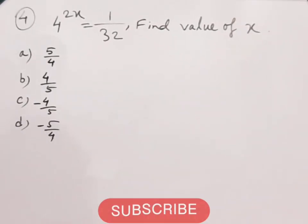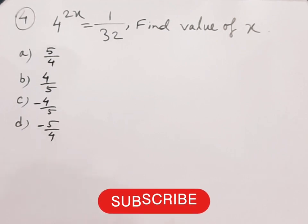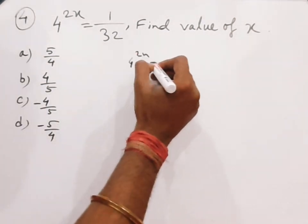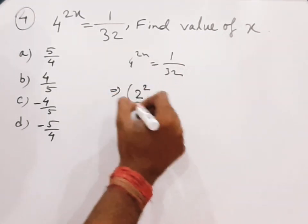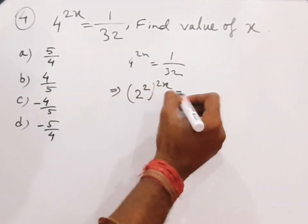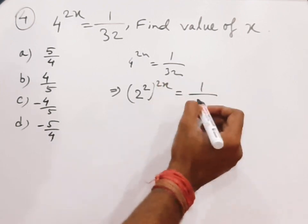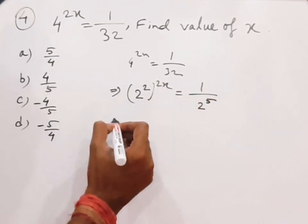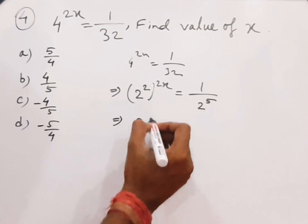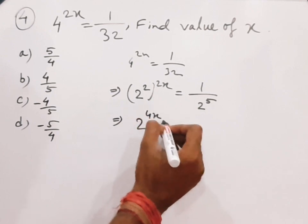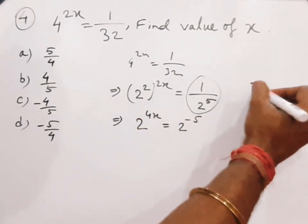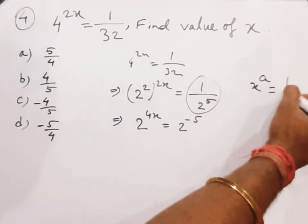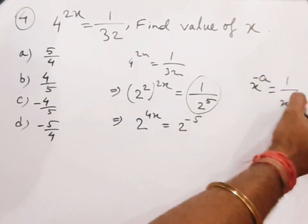Next question: 4 to the power 2x equals 1/32. Find the value of x. So 4^(2x) means (2²)^(2x) equals 1/32, which means 2 to the power 5. Therefore 2^(4x) equals 2^(−5), because 1 by x^a equals x to the power minus a.